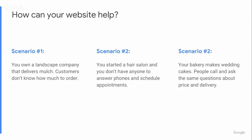Here are three functionality scenarios. First, a landscape company delivers mulch — customers don't know how much to order, so create a mulch calculator where they enter dimensions and depth and it tells them how many yards to order. Second, a hair salon with no one to answer phones could use an online booking form that finds openings and schedules appointments. Third, a bakery that makes wedding cakes gets the same questions every day — a FAQ page would reduce calls and get customers to the information they need.